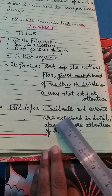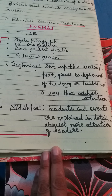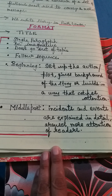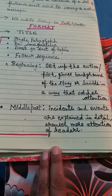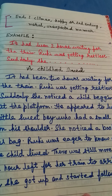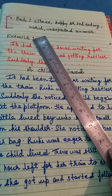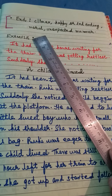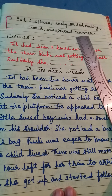In the middle part, incidents and events are explained in detail to arouse the reader's attention. Whether you're writing about an accident, an event, or an exhibition, all incidents should be explained in a crisp, detailed manner without confusing the readers. The last part is the climax — it could be a happy or sad ending, or it may contain a moral or unexpected conclusion.